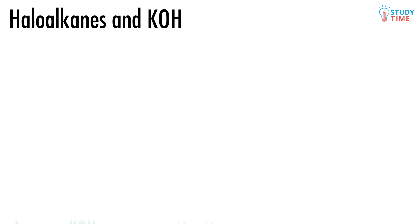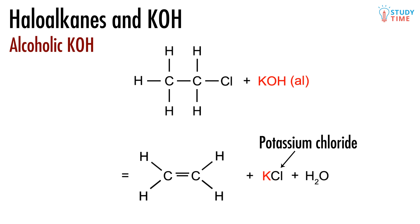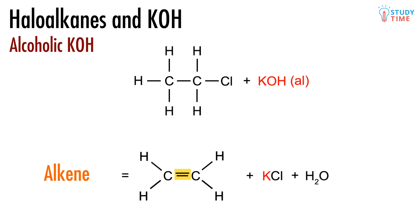Something completely different happens when we react a haloalkane — we'll use the same one for simplicity's sake — with alcoholic KOH. This time we get an elimination reaction, which involves forming a double bond in the alkane. The two inorganic products, potassium chloride and water, are not really important. What is important is to realise what has happened in this elimination reaction. The chlorine has gone and so has one of the hydrogen atoms from the left hand carbon. Then a double bond has formed between the two carbon atoms, which means that instead of an alkane, we now have an alkene — specifically, ethene.